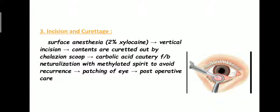The contents are curetted out using the chalazion scoop. Then carbolic acid cautery is applied, followed by neutralization with methylated spirit to avoid recurrence. This step is followed by patching of the eye and post-operative care. This is the incision and curettage procedure done for chalazion.